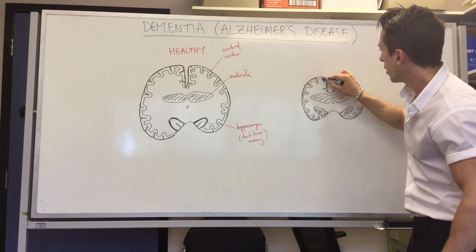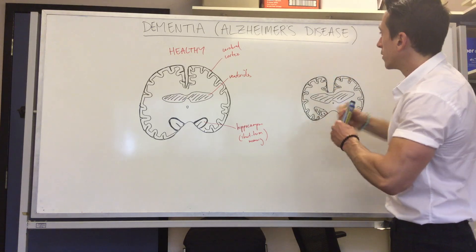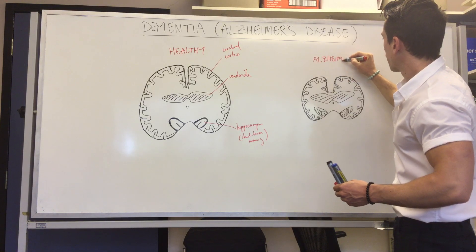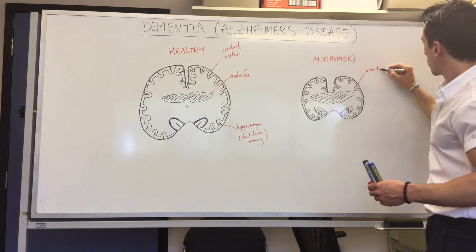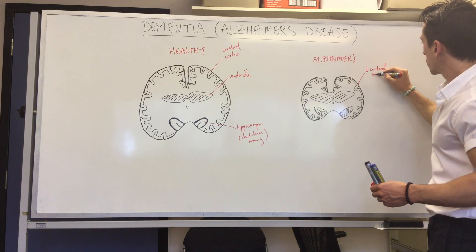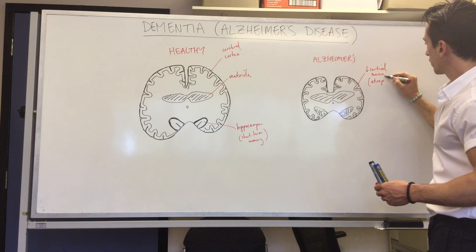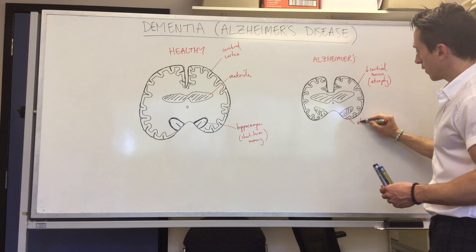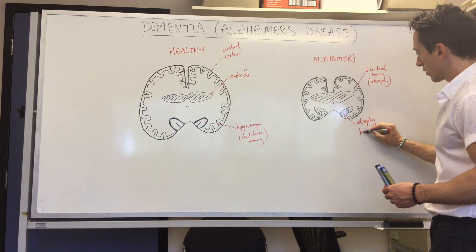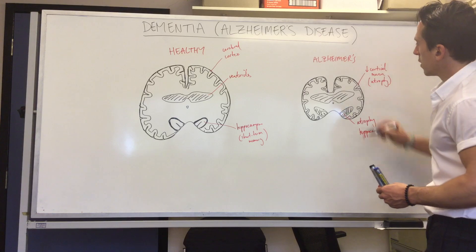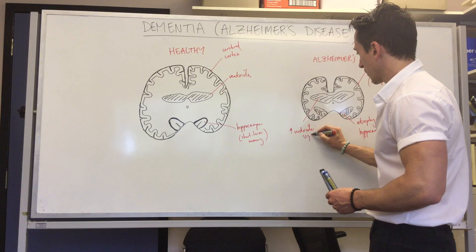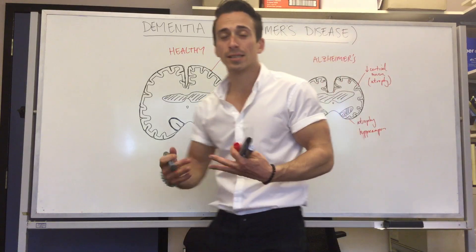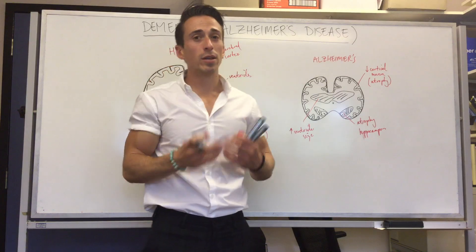This is what you would see in a post-mortem brain or a brain scan of an individual with Alzheimer's disease. Key findings include: reduced cortical neurons (cortical atrophy), atrophy of the hippocampus, and increased ventricle size.